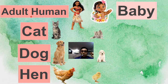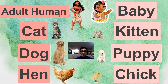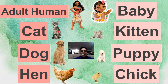When it comes to humans, we call a grown-up — like a teacher, like mommy, like daddy — an adult human. And we call a baby human simply 'baby.' Now, for a cat, we call the baby cat a kitten.